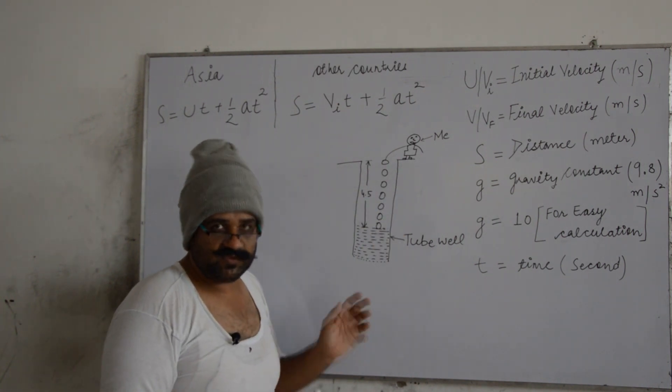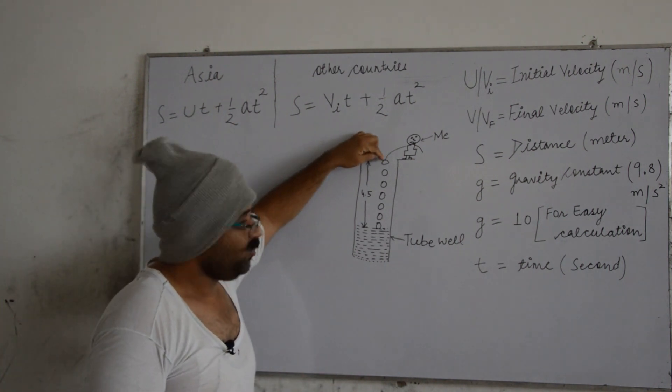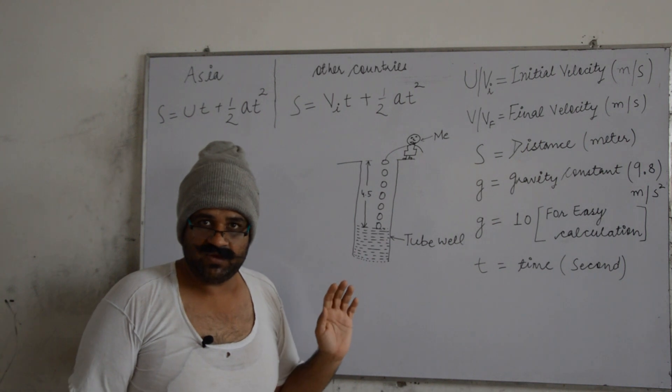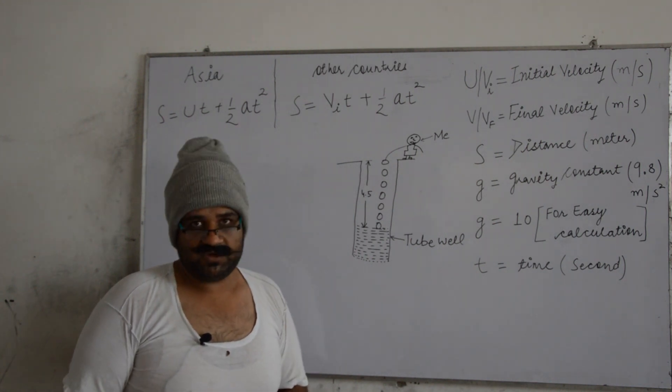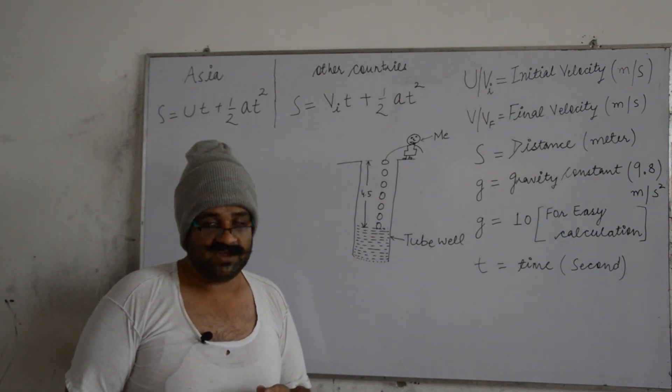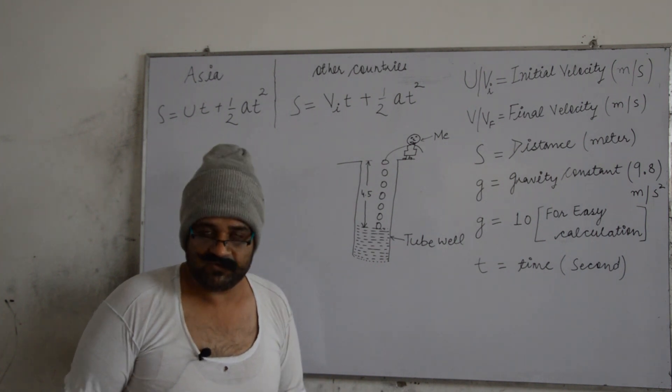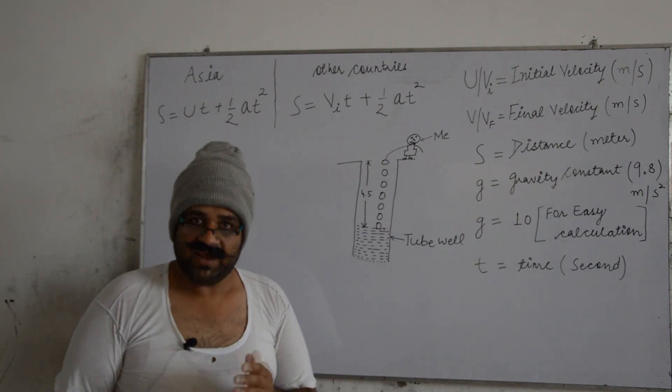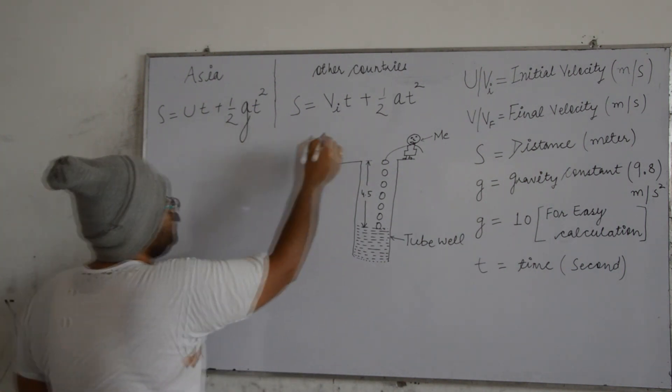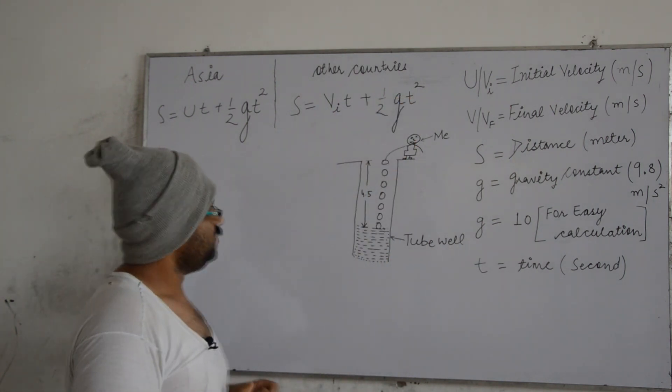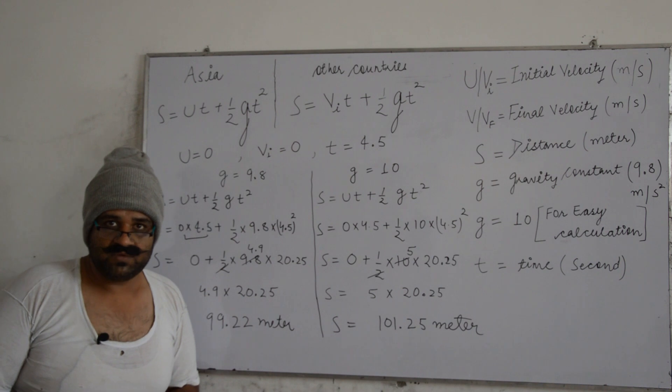Now observe carefully once again. This is tube well and this is me, yeah I know I'm not a good painter. Let's focus on the board. When you drop the stone it falls down, agree? Or let me correct myself, when you drop the stone it will definitely fall down. The stone fall toward the earth then there exists gravitational force of attraction and that is due to the earth, that is gravity. All about. Therefore we're going to use g instead of a acceleration here, we're going to use g instead of a acceleration. Agree?